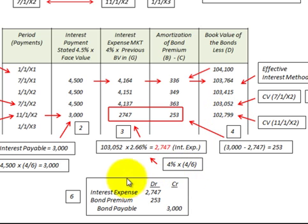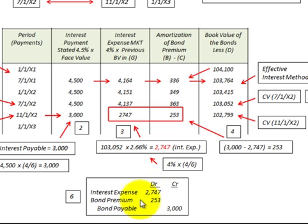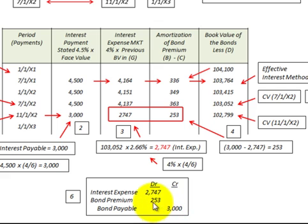Looking at debits and credits: we have a debit to interest expense of $2,747, a debit to bond premium amortization of $253, and a credit balance of $3,000 on our bonds payable amount.